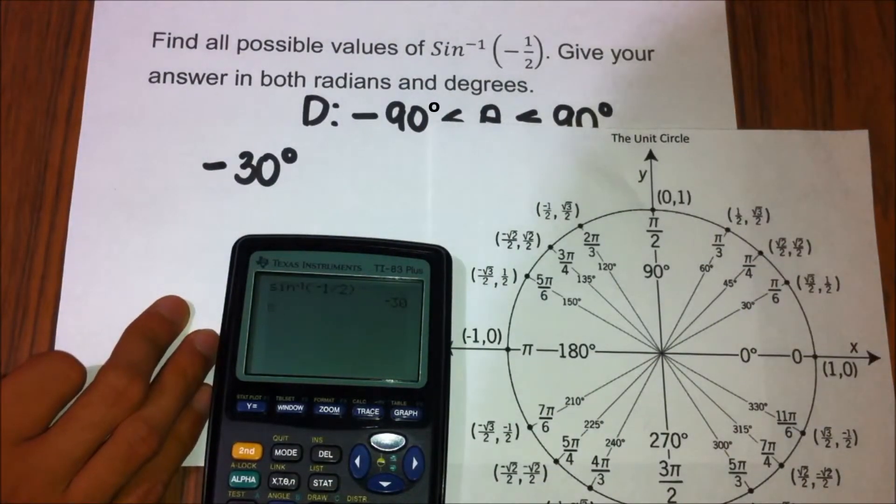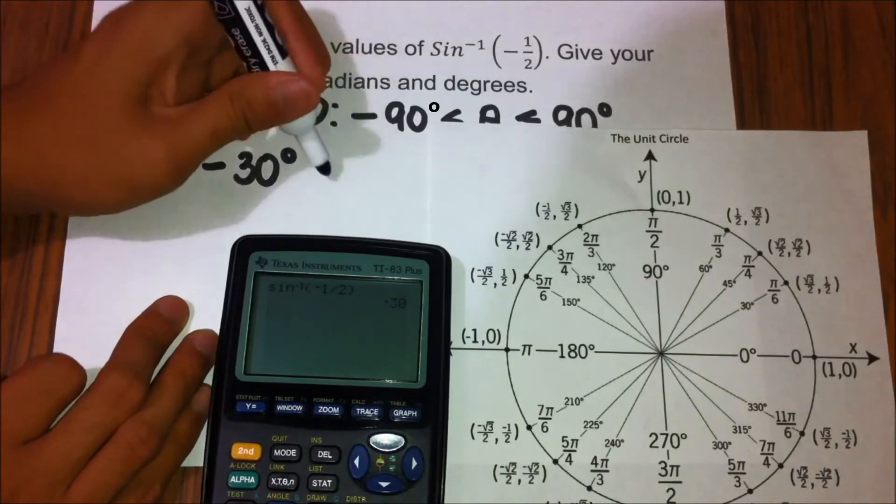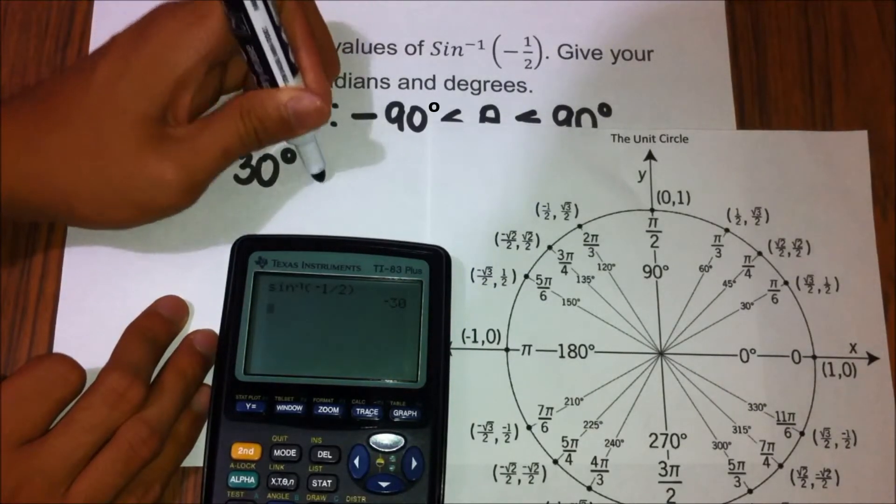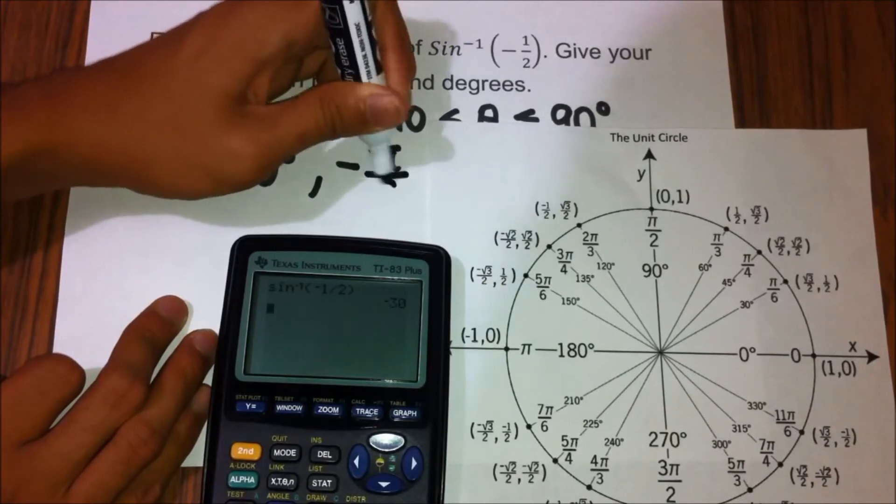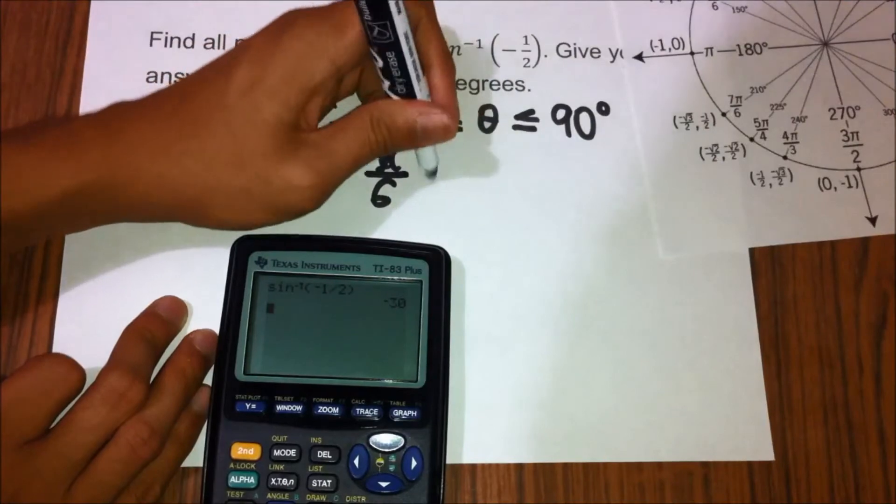Then adjust the same to negative so that it will match negative 30 degrees. So our radian value is negative pi over 6 radians.